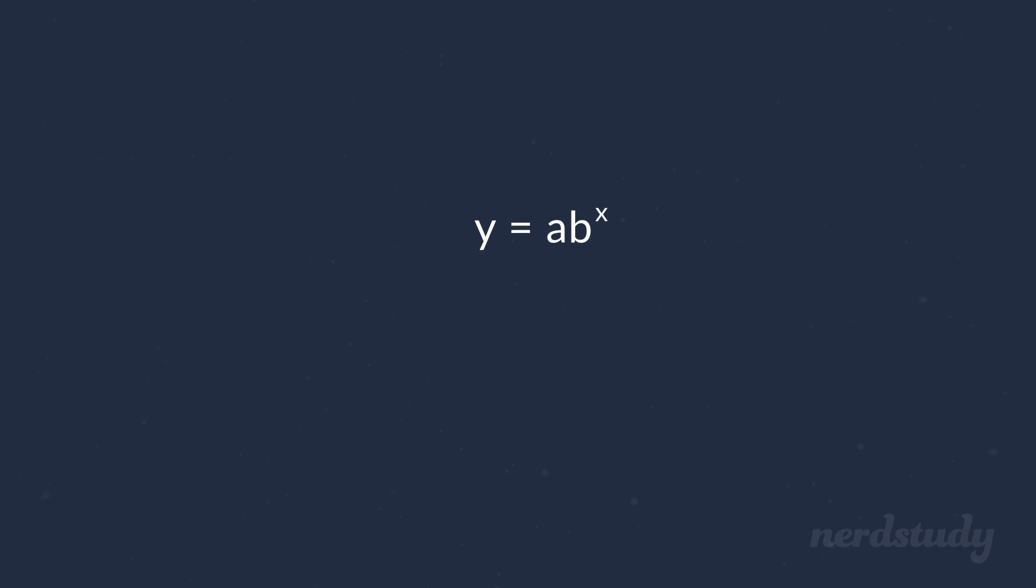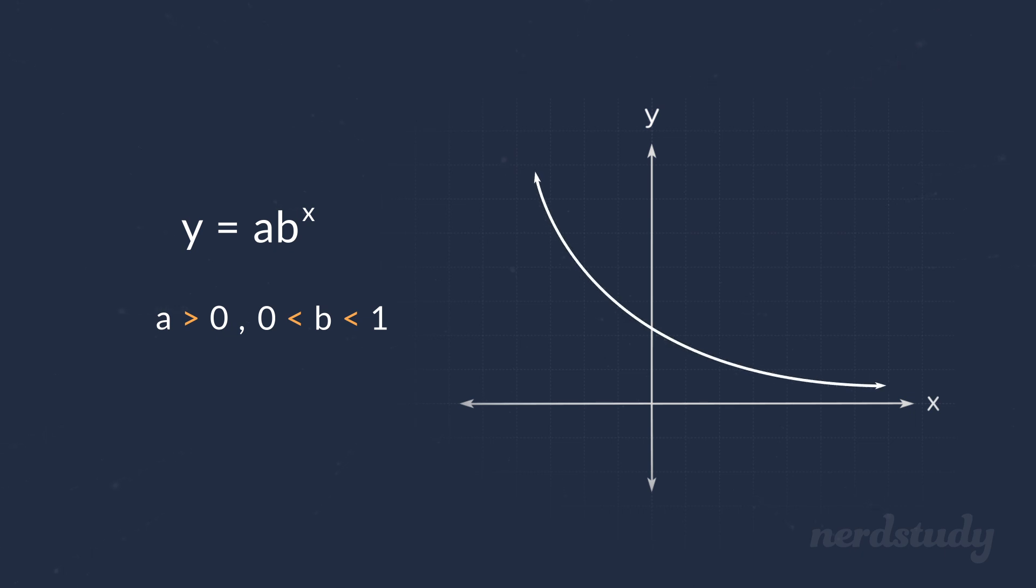Here's an example of a generic exponential function. Now, if a is greater than 0 and b is greater than 1, then we can expect the graph to look something like this. If a is greater than 0 and b is greater than 0 but less than 1, then the graph will look something like this.